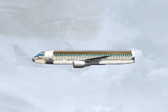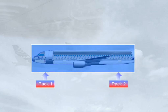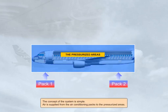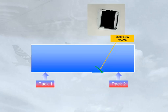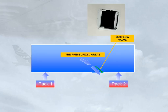The concept of the system is simple. Air is supplied from the air conditioning packs to the pressurized areas. An outflow valve is used to regulate the amount of air allowed to escape from the pressurized areas.